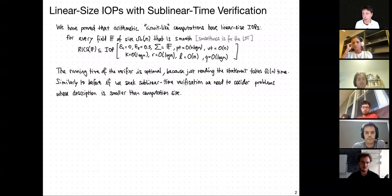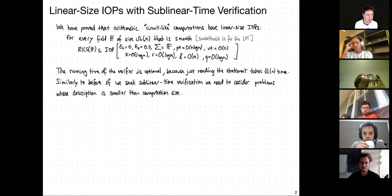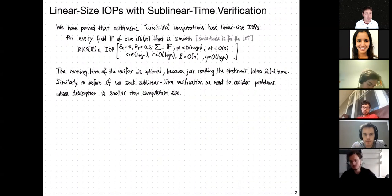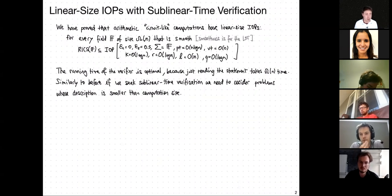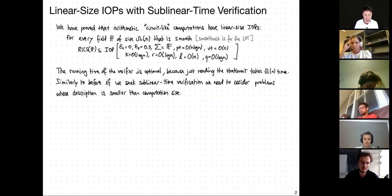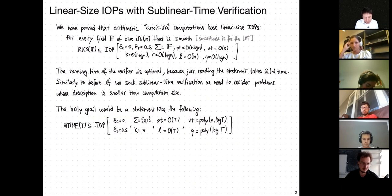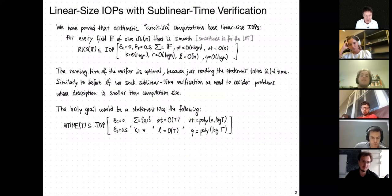This is the theorem we proved: for a large enough smooth field — the smoothness was used for the FRI test — the key properties achieved were linear size and logarithmic query complexity, but crucially the running time was still linear in the problem size. Actually this running time is optimal because just reading the size of the circuit or the R1CS instance will cost you order runtime.